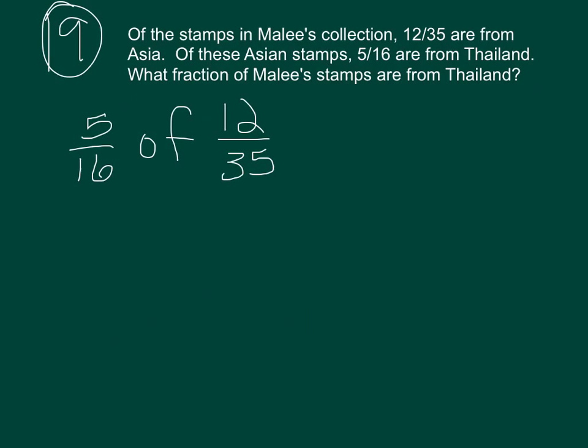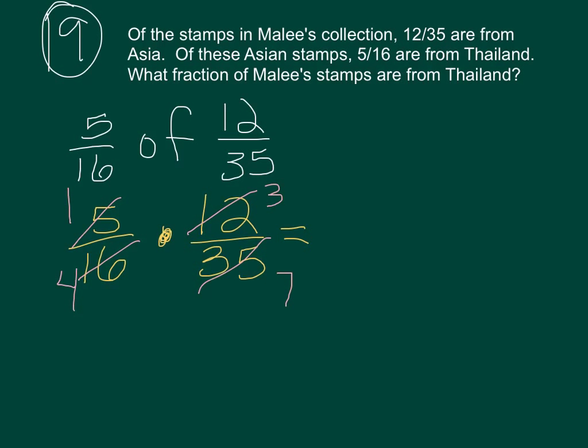Again, what we're really looking at here is multiplication, because we want 5 sixteenths of a group that is the size, in this case, of the fraction, 12 over 35. Now, unless you want to end up in crazy, crazy fraction land, this is one of the wonderful places where you are going to step forward and say, I am going to cross-simplify. 5 and 35, oh yeah, can both be divided by 5. And we end up with those quotients. 12 and 16 can both be divided by 4. We end up with these quotients. And now we have something definitely simpler.